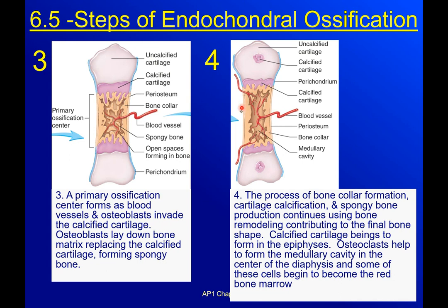Moving to step four, this is starting to look more like the bone we know — we've got compact bone on the outside and the medullary cavity forming in the middle. The process of cartilage calcification and spongy bone production continues using bone remodeling, contributing to the final bone shape. Calcified cartilage also begins to form in the epiphyses.